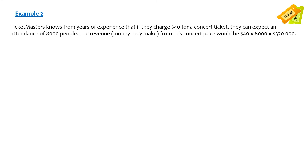Example 2 — this is a big one. Ticketmaster knows from years of experience that if they charge $40 for a concert ticket, they can expect an attendance of 8,000 people. The revenue — the money they make — would be $40 times 8,000 tickets, which is $320,000.